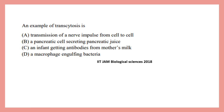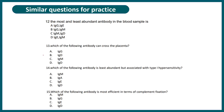A question from IIT JAM 2018 asks: an example of transcytosis is — transmission of nerve impulse, a pancreatic cell secreting pancreatic juice, an infant getting antibody from mother's milk, or a macrophage engulfing a bacterium? The correct answer is option C, because IgA antibody undergoes transcytosis.